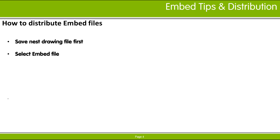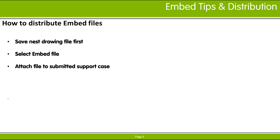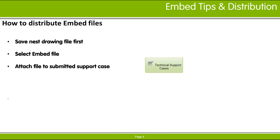Once the embed file has been saved, a file access dialog is provided automatically at the folder location of the saved embed file. You can then generate a support case in the support portal and attach the embed file to the case, or the file can be attached to an email and sent to your RAIDAN reseller.